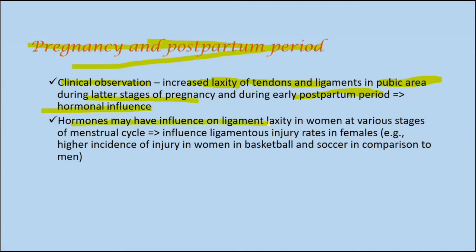This laxity is also influenced by hormonal changes. Hormones influence ligament laxity in women at various stages — not only postpartum and during later stages of pregnancy, but also during the menstrual cycle. For female athletes who play soccer or basketball, hormonal changes may increase their chances of ligament injury compared to men, where the rate of ligament injury is lower.